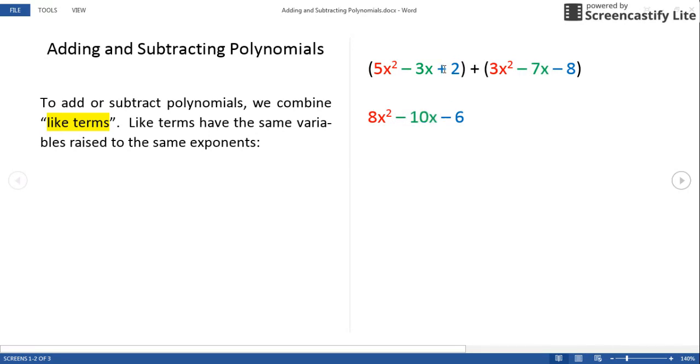For the constant values, a positive 2 and a negative 8, they have different signs, so we'll subtract these.